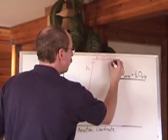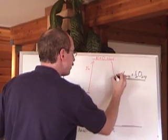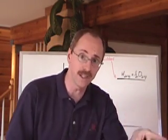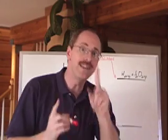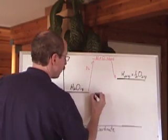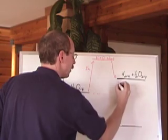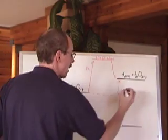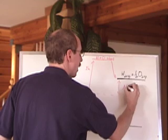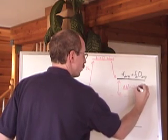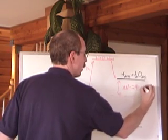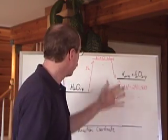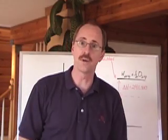Energy is going to be released as well. Even in reactions that are endothermic, energy is still released. But the net amount of energy difference is a gain in energy from where you start to where you stop. That's called the delta H, the change in energy, which in this case is positive 241.8 kilojoules. That's how you do an endothermic graph.